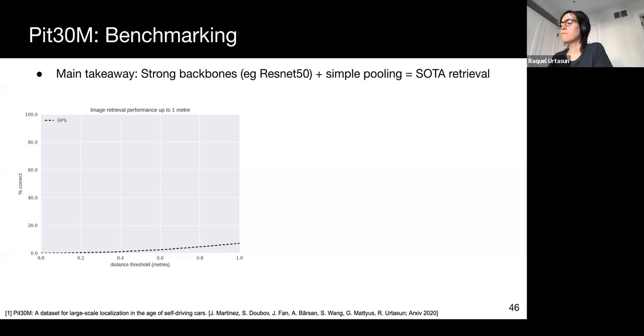We also did an in-depth benchmarking, comparing multiple approaches on our dataset. The main takeaway point from our experiments is that strong architectures with simple pooling schemes show excellent performance in these tasks. In this plot, the x-axis goes from 0 to 1 meter, and the plot indicates what percent of the queries are correctly localized within a certain distance. As you can see, GPS struggles to localize even 5% of the images within a meter, which is not good enough for autonomous driving.